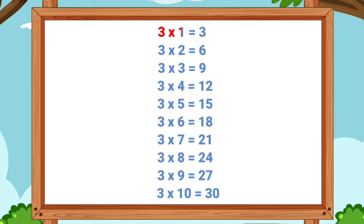Now let's sing one more time. 3 ones are 3. 3 twos are 6. 3 threes are 9. 3 fours are 12. 3 fives are 15. 3 sixes are 18. 3 sevens are 21. 3 eights are 24. 3 nines are 27. 3 tens are 30.